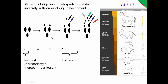When we looked at organisms like horses and others that evolved to a state where they only used one digit, it was always digit number three, and they always lost digits one and five first — those are the ones that developed last. So the developmental trajectory acted as a constraint on the type of evolution we saw in adults.